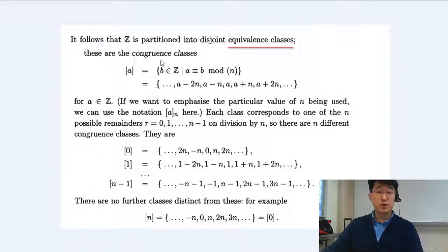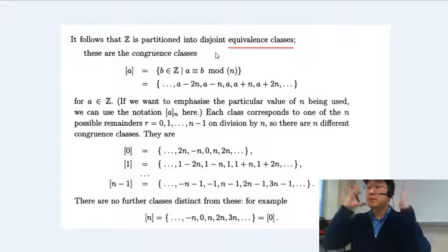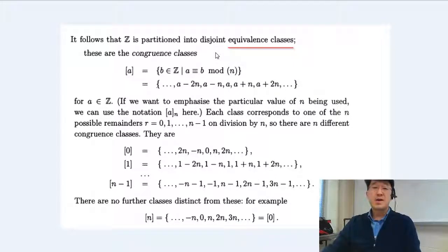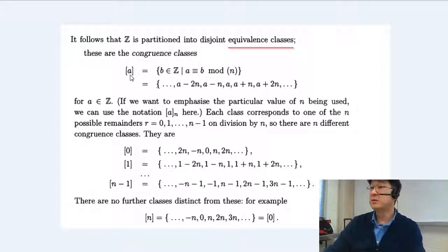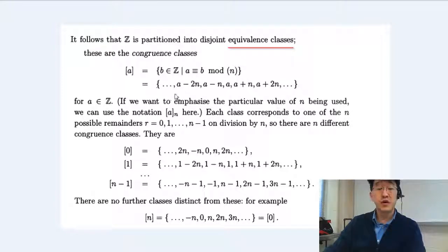Equivalence classes are called congruence classes. Let's go through the equivalence classes the way we know. Z contains infinitely many numbers, and the bracket A is standard notation for equivalence classes — here, congruence classes. What's in the bracket A is anything that has an equivalence relation with A. What is the equivalence relation? It's congruent to A, and you collect all of them. That's the congruence classes.